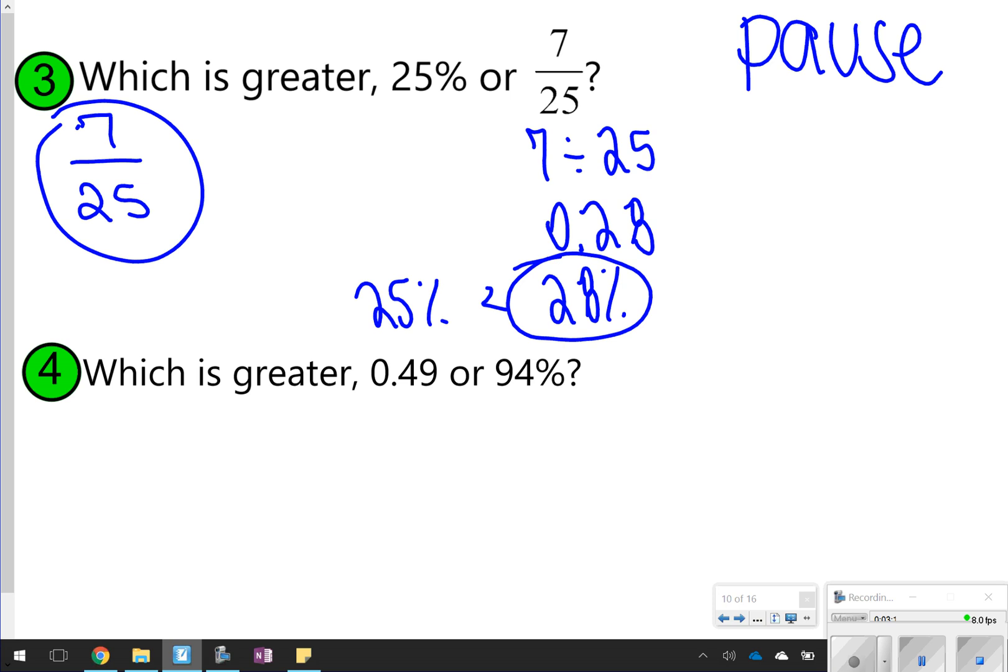Okay, over here, which is greater 0.49 or 94%, this one should be really obvious to you. It's going to be 94%, but just in case you didn't tell, you can change that decimal 0.49 into a percentage. 0.49 is equal to 49%, and that is nowhere close to being bigger than 94%. How'd you do?